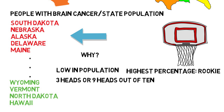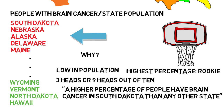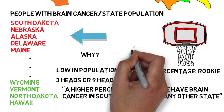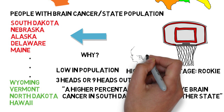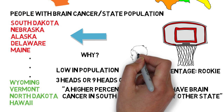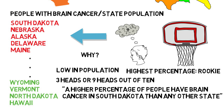So what can we learn from this? It's very easy to read something that is true — like a higher percentage of people have brain cancer in South Dakota than in any other state — but without a reason for why, we can easily come up with very wrong conclusions, like there must be some epidemic going on there. When you're presented with information, be open to the idea that there is something else beneath the surface that could easily disprove any assumptions you've made.